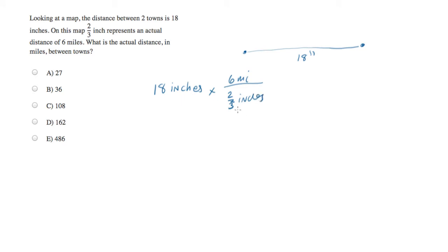So, this fraction that I've just multiplied by is equal to 1, because 6 miles and 2/3 inches are equivalent. Now, I wrote the fraction this way specifically so that the inches units would cancel out.